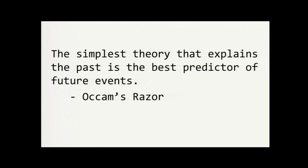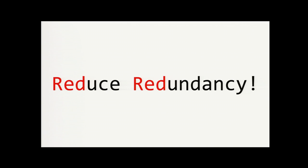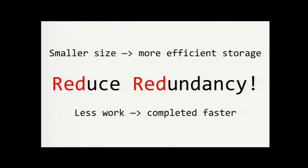So, as Occam's razor says, the simplest theory that explains the past is the best predictor for future events. It's obviously useful to simplify your data from its original form to a more concise representation. We want to eliminate as much of the redundancy as possible. By compressing data, we can consume less disk space, and that allows us to store more data. And we can also transmit fewer bytes across networks, which is faster and saves bandwidth capacity.